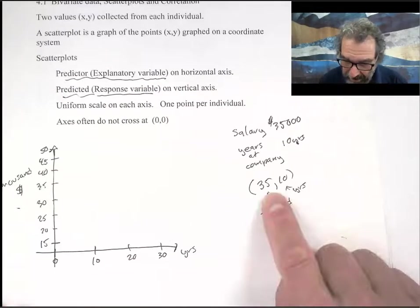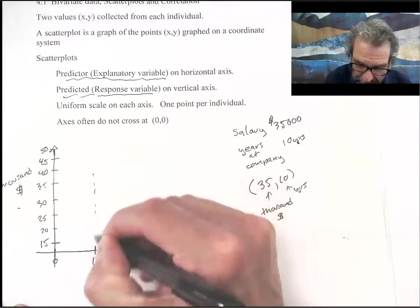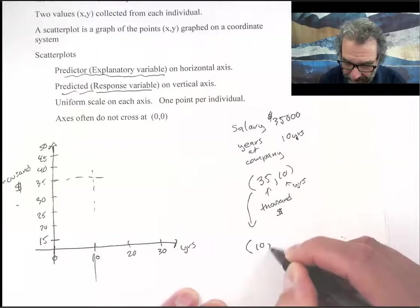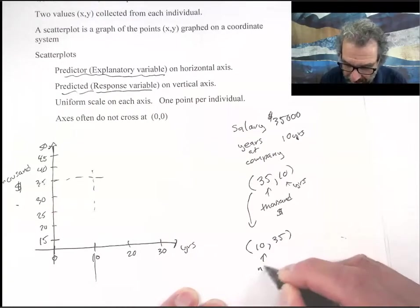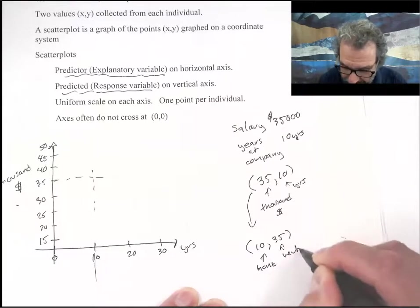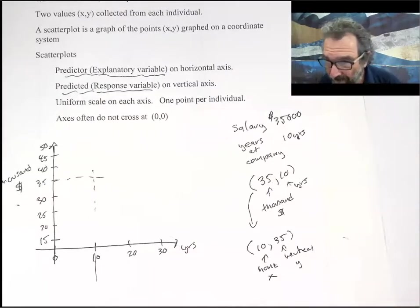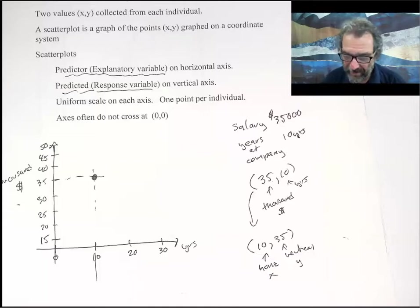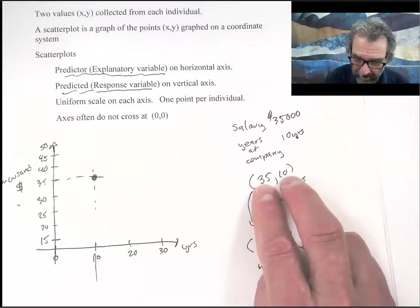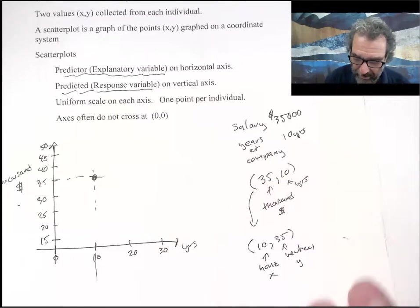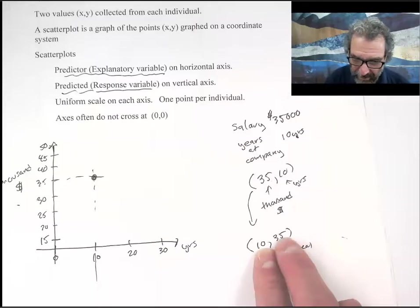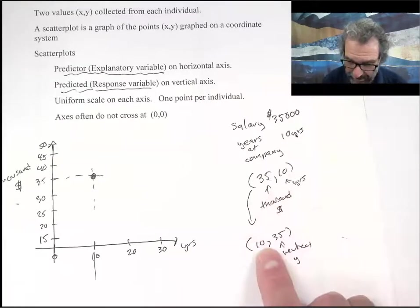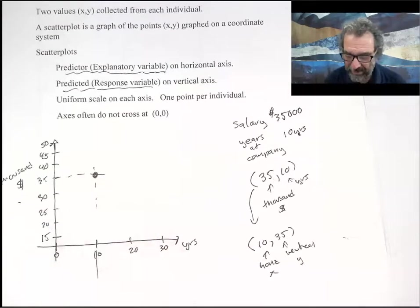And then we're going to plot this point. At 10 years, so we go 10 for the horizontal axis. We want 35,000. We probably want to list it as x is 10, y is 35 because we're used to the first one being horizontal and the second one being vertical. So there we go. We've managed to plot it there. So making a scatterplot amounts to collecting the data in ordered pair fashion. And then figuring out which one is explanatory, which is response. We plotted 10, 35.